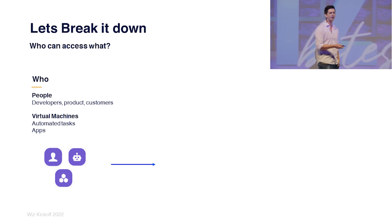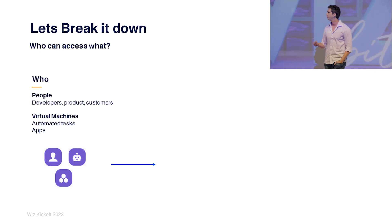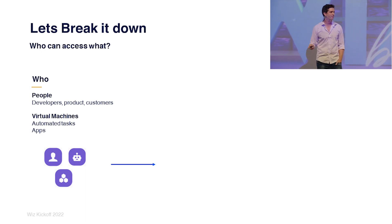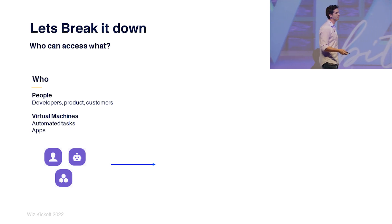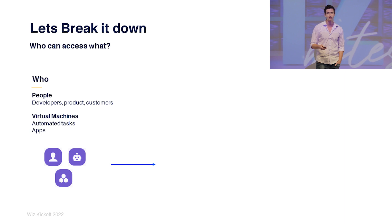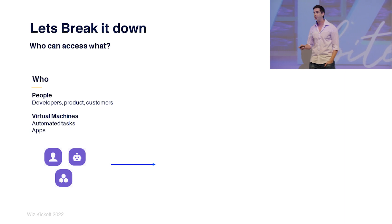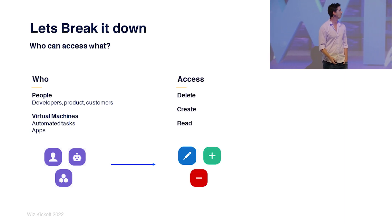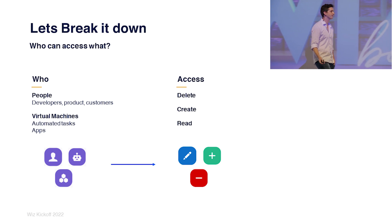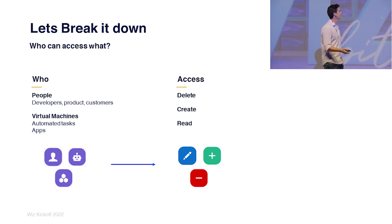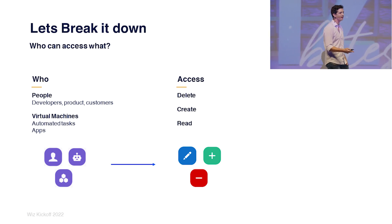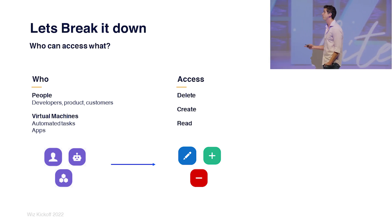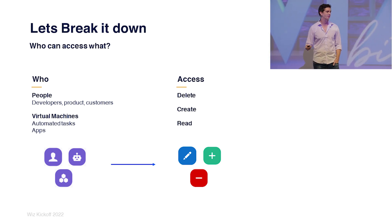But today, in the cloud, that is different. Virtual machines have permissions. Containers have permissions. Lambda functions have permissions. Everything has permissions. Everything can do something in the environment. And the second part is access — what can it do? Can it read? Can it delete? Can it create? This is really different. Deleting something is more sensitive than reading something.